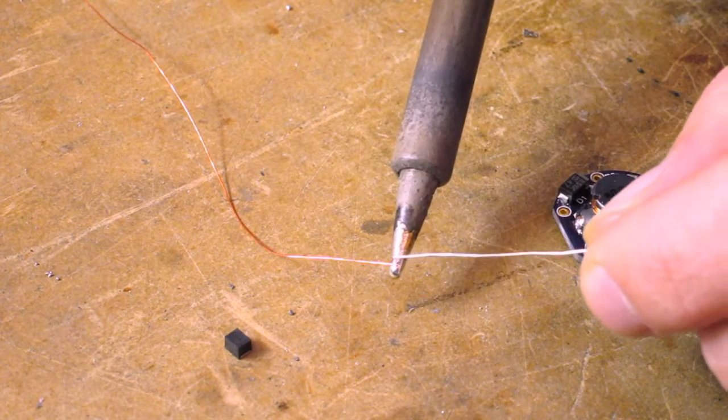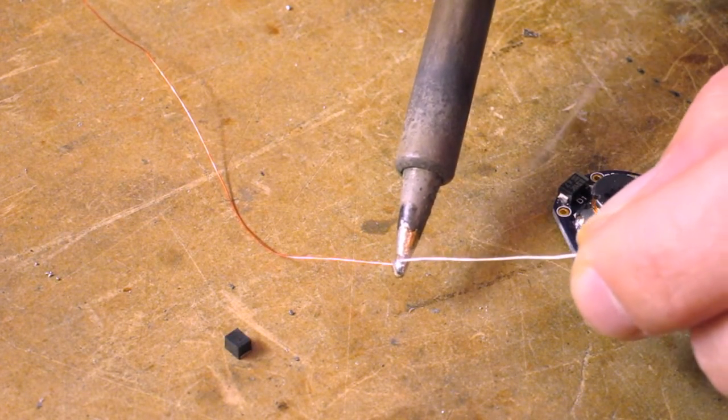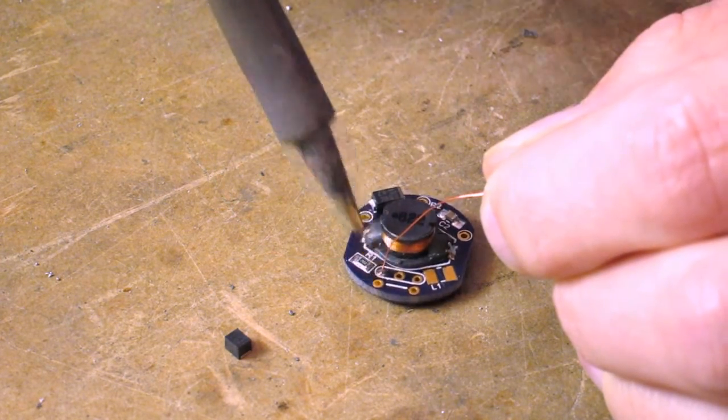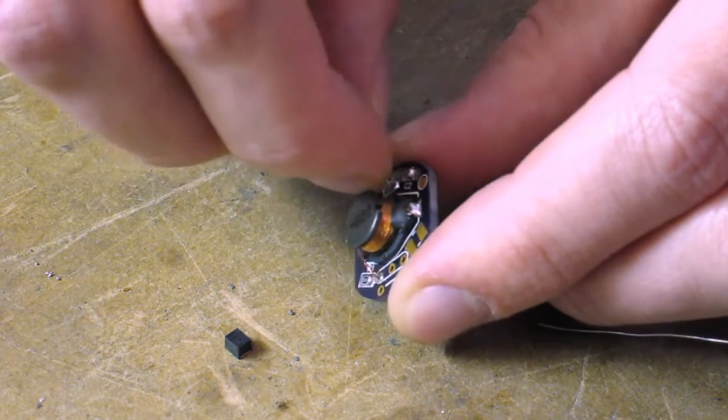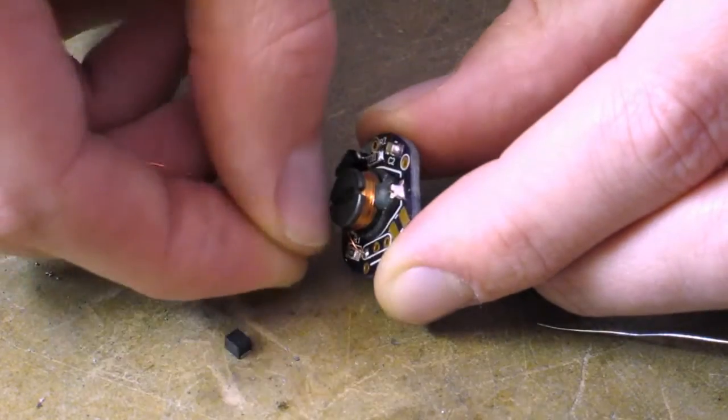Tin the end of a 13-inch piece of 32-gauge magnet wire. Solder it to the upper left through hole next to the coil. Then wrap it around the coil clockwise five turns.